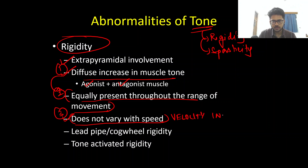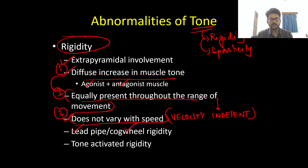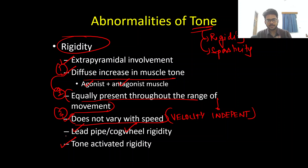Rigidity is velocity independent — even if you move the joint fast or slow, you're going to appreciate the same degree of rigidity. There are two types of rigidity: lead pipe rigidity and cogwheel rigidity.